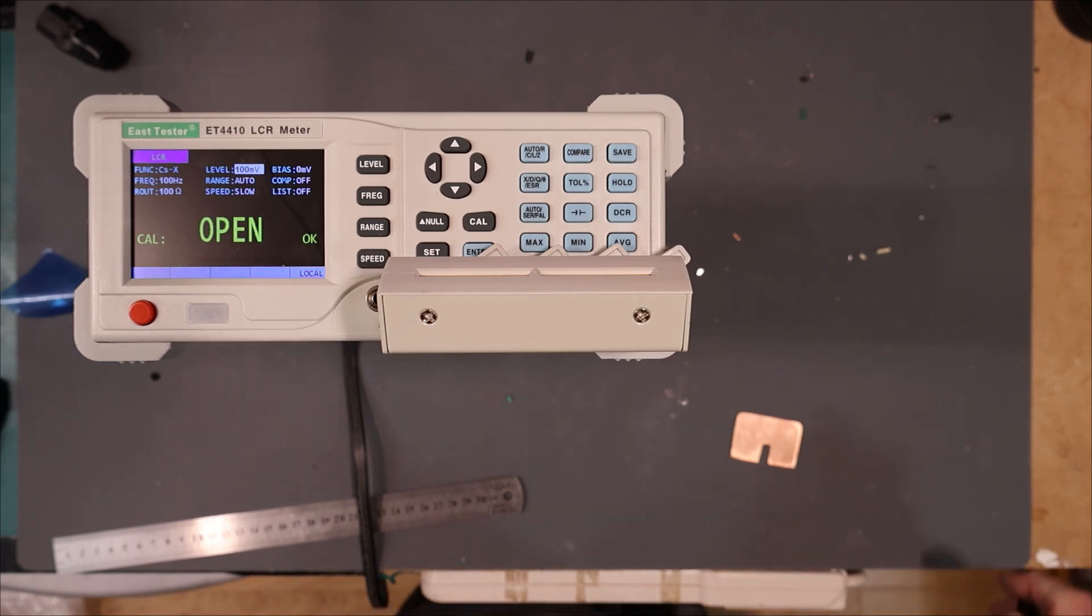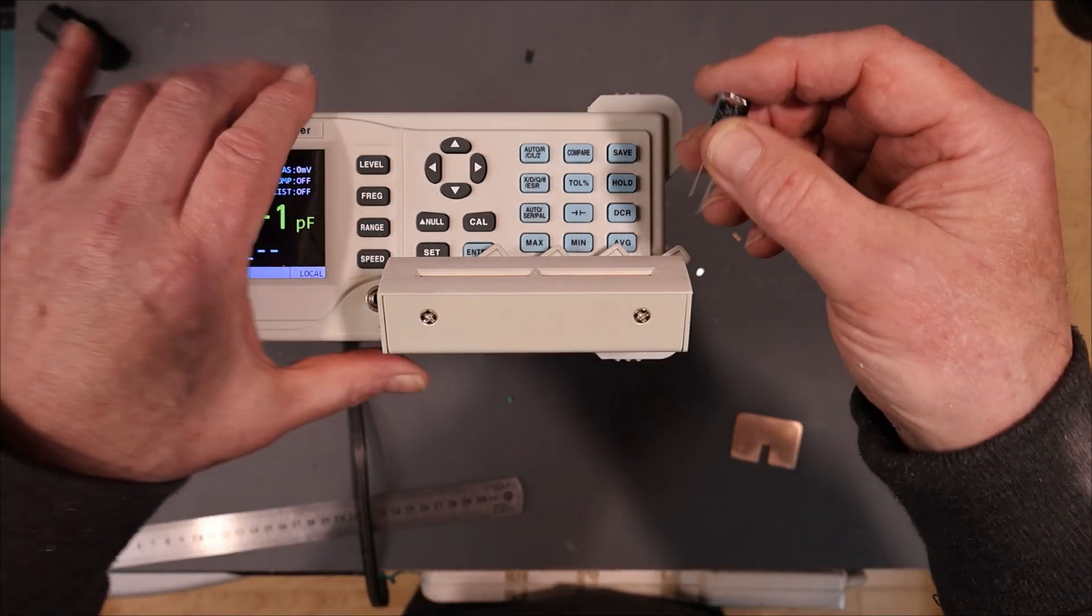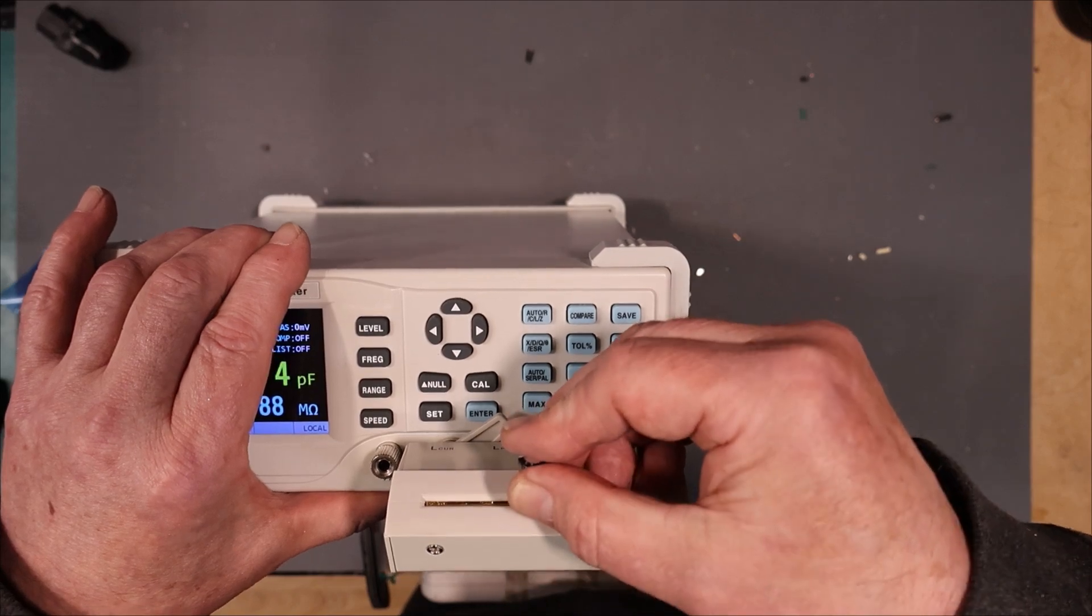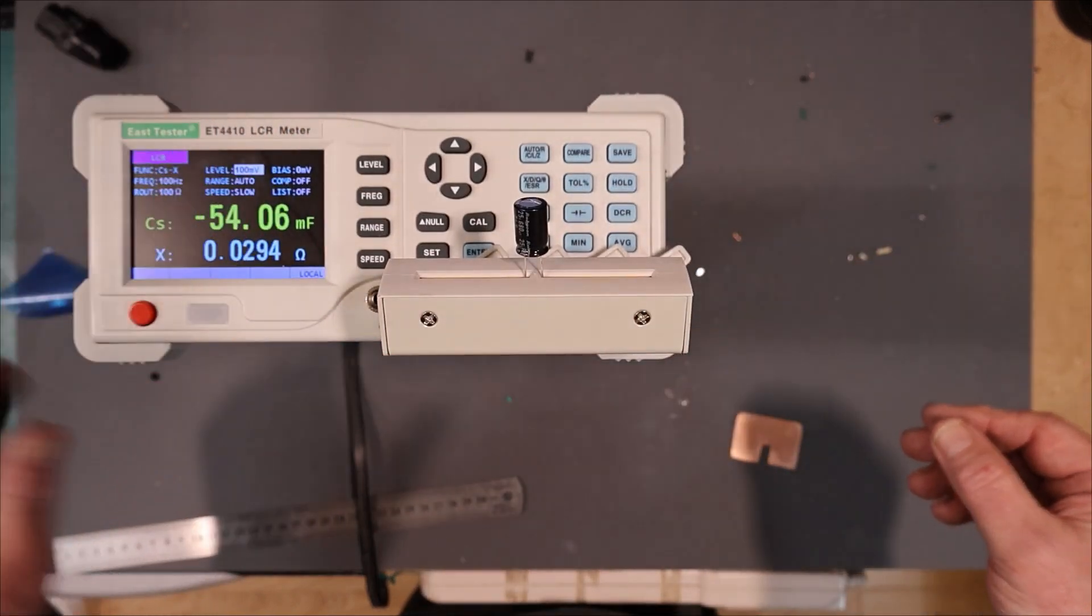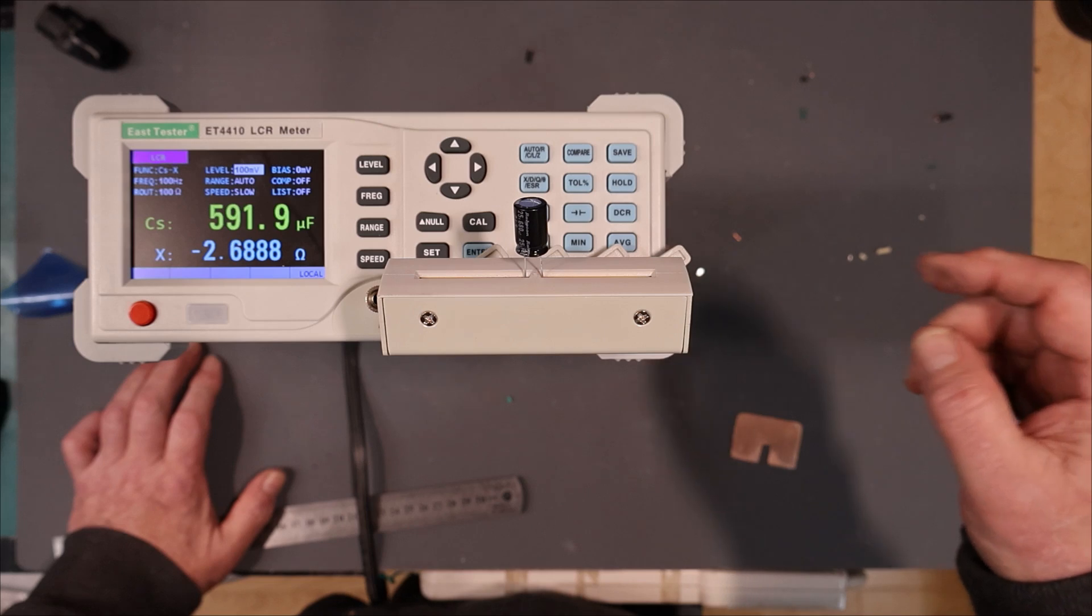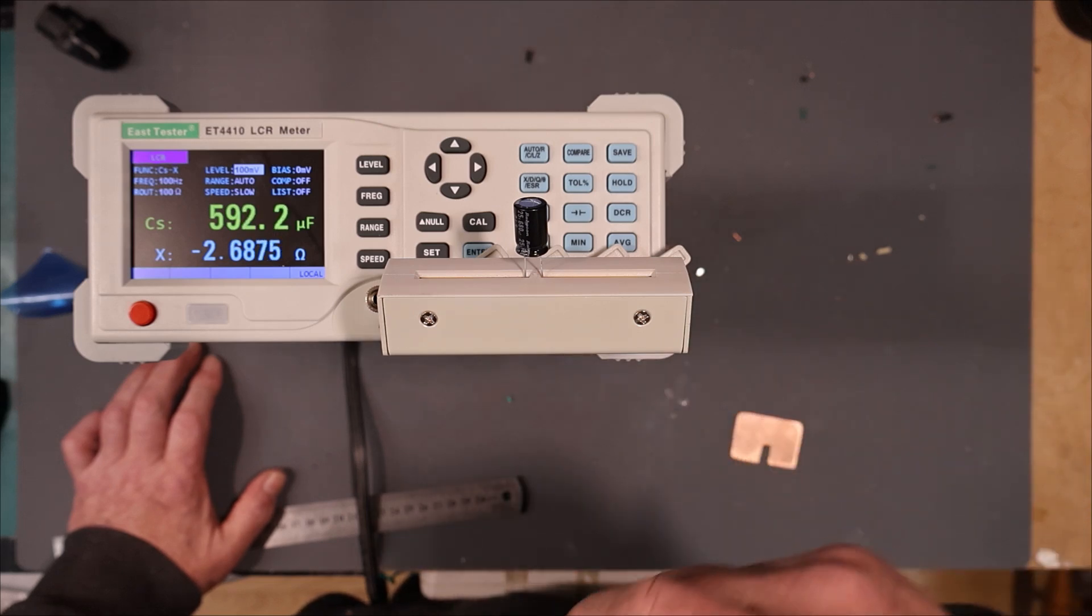Let's test this 680 UF capacitor. It's specced to be within plus or minus 20%. And just slide it in between the contacts. We're at 100 Hz here to test for capacitance. 593 UF. That's about 13% low, so it's within spec. Okay, let's set up to test the ESR.